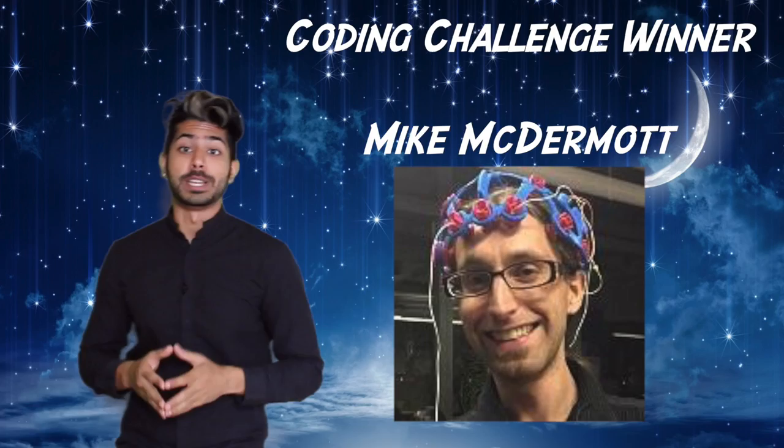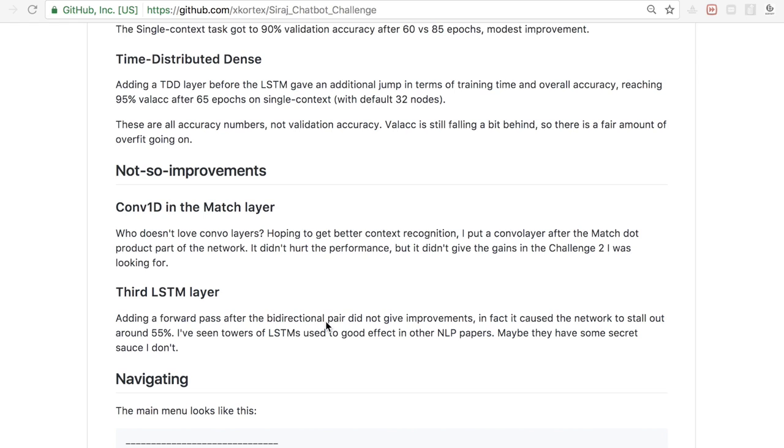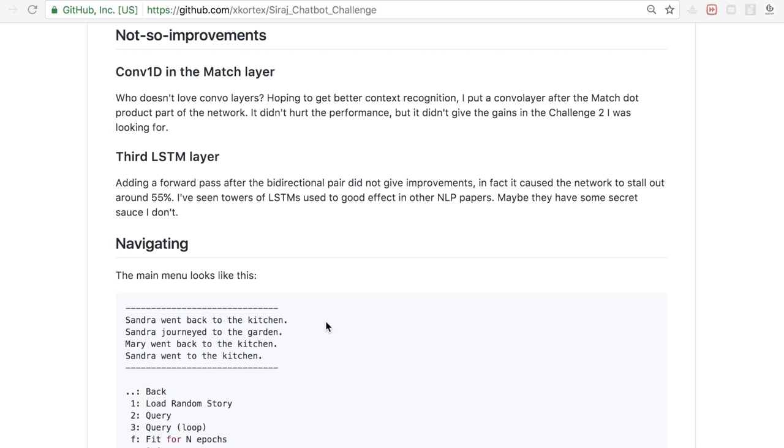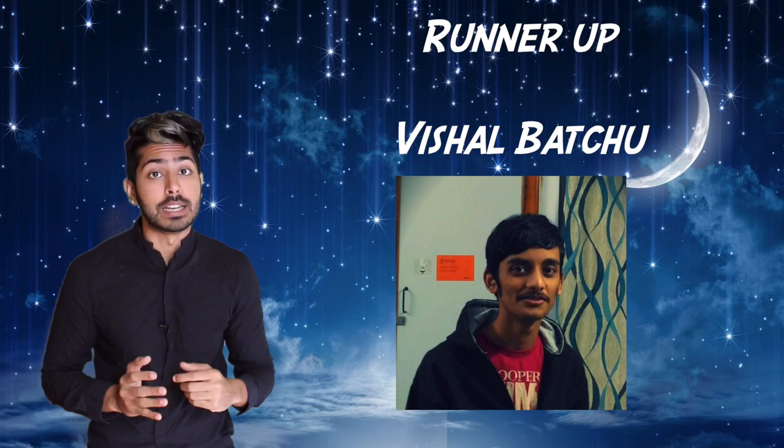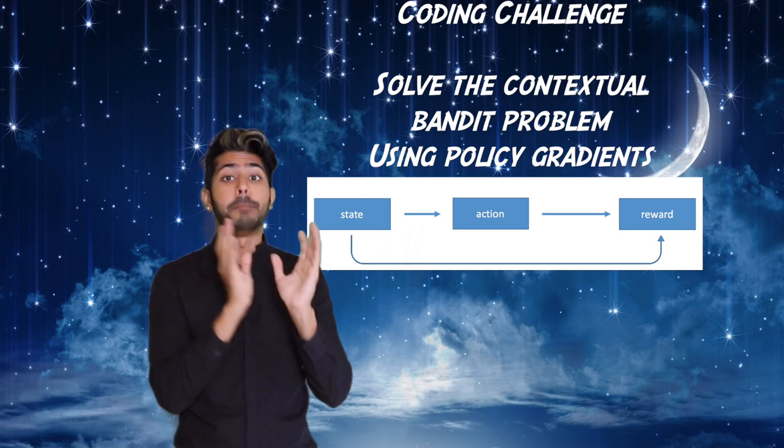The coding challenge winner for this video is Mike McDermott. Mike improved the bleeding edge memory network model from my last video to create a Q&A chatbot by adding a bi-directional LSTM and time distributed dense layer to it. This is seriously amazing stuff. He could publish his results to a journal. And the runner-up is Vishal Batju, who also had publishable results and you can run his code right from the command line.